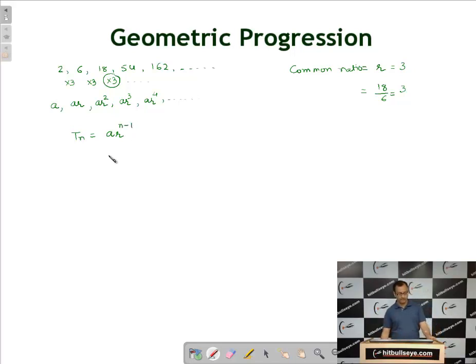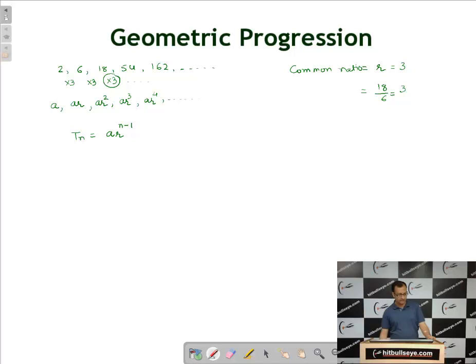To summarize: for a geometric progression, the nth term is tn = a × r^(n−1), where tn is the nth term, a is the first term, and r is the common ratio.